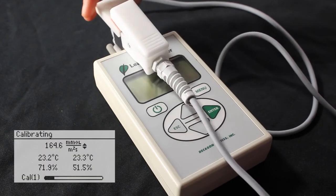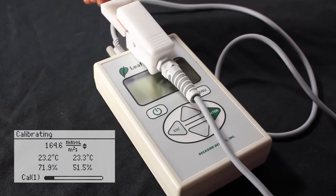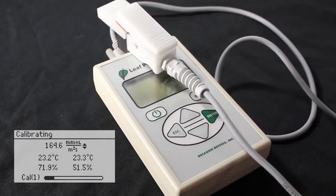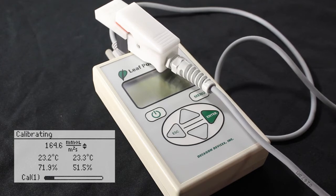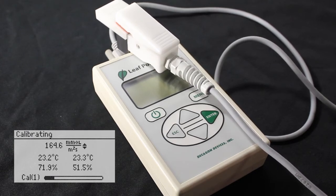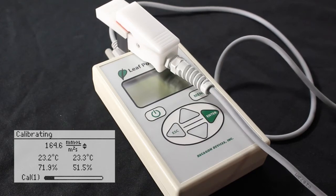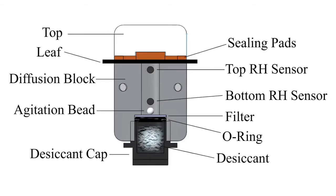Once the sensor head is attached to the calibration plate, the leaf porometer will automatically sense the calibration plate and begin the first calibration measurement. While the sensor head is in measuring mode, be sure to align it so that the aluminum block is facing down. Take caution not to shake, tilt, or touch the metal block on the sensor head while the measurement is being taken. This ensures that the bead will settle to the bottom and not interfere with the diffusion path.